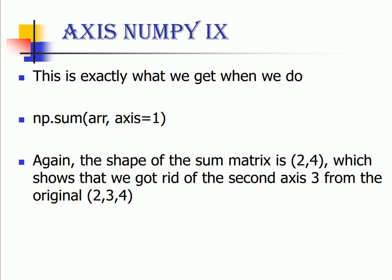And then when we apply an np.sum function this is the exact result that we get. Again if you notice the shape of the matrix is 2 x 4 which shows that we got rid of the second axis 3 from the original 2 x 3 x 4.